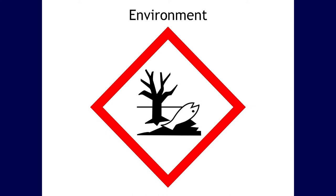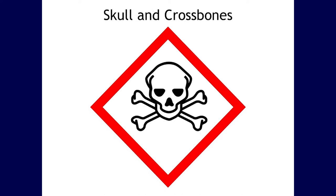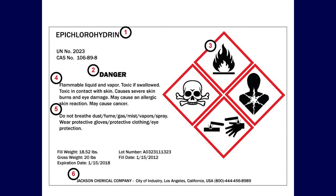The environment pictogram is not an OSHA requirement — it conveys that the product has aquatic toxicity and could be harmful to the environment. It shows a dead fish and what is actually dead coral, like coral reef. The skull and crossbones pictogram conveys acute toxicity, either fatal or toxic. Sometimes multiple pictograms appear on a container, indicating multiple hazards — be sure to read the directions and follow all manufacturer's recommendations for personal protective equipment.